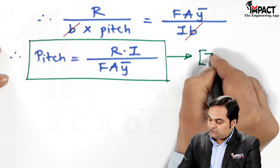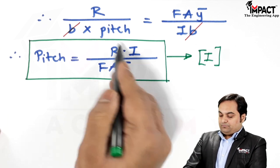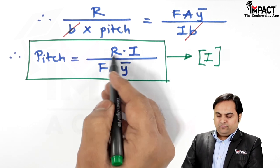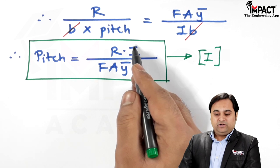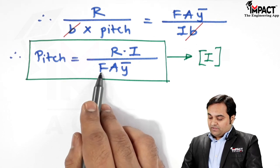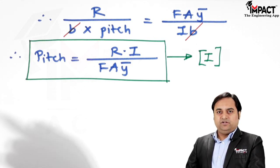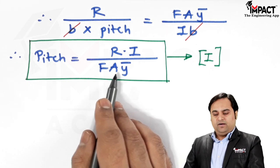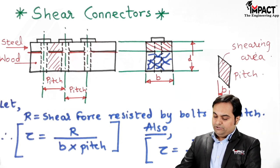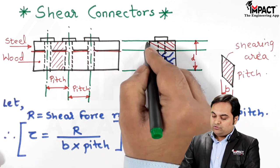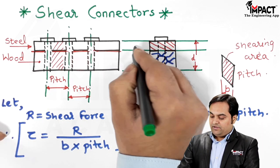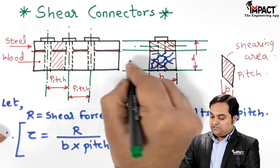From Equation 1, R is the shear force acting on the bolts at the junction, which will be known to us. I is the moment of inertia for the complete section. F is the total external shear force acting on the member. A is the area being considered — for example, when calculating the shear force at the steel-wood junction from the neutral axis, we take the area of the steel portion.